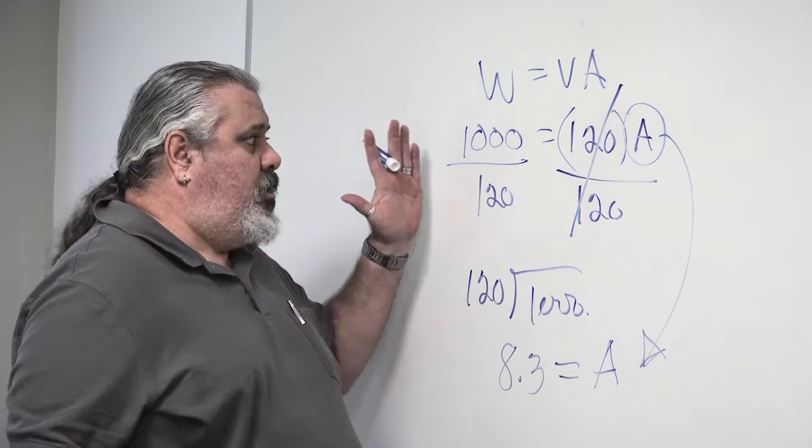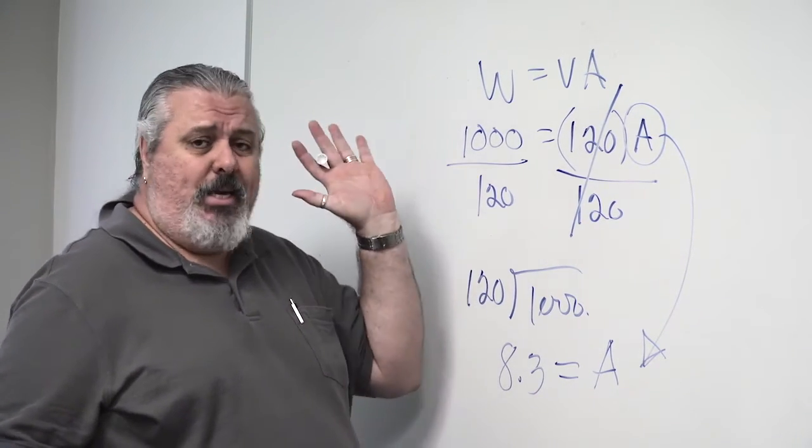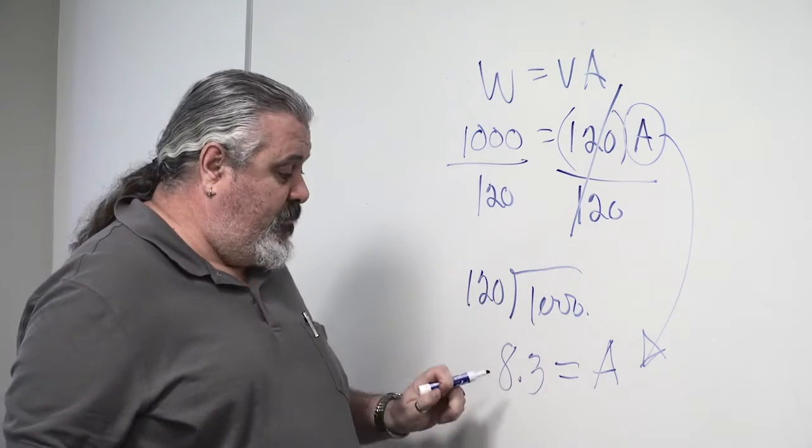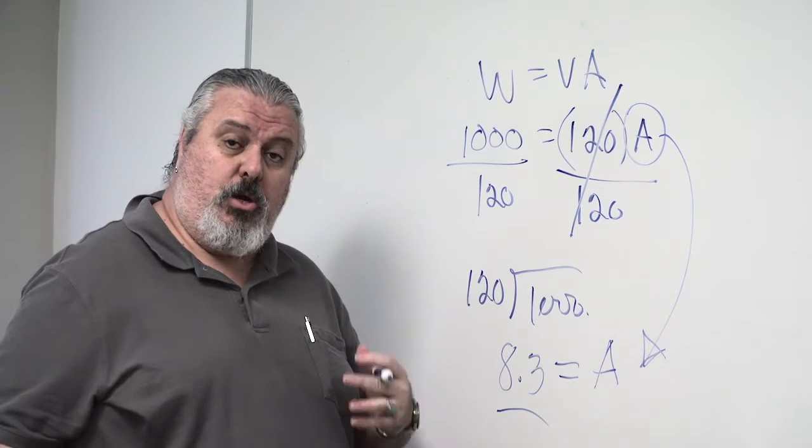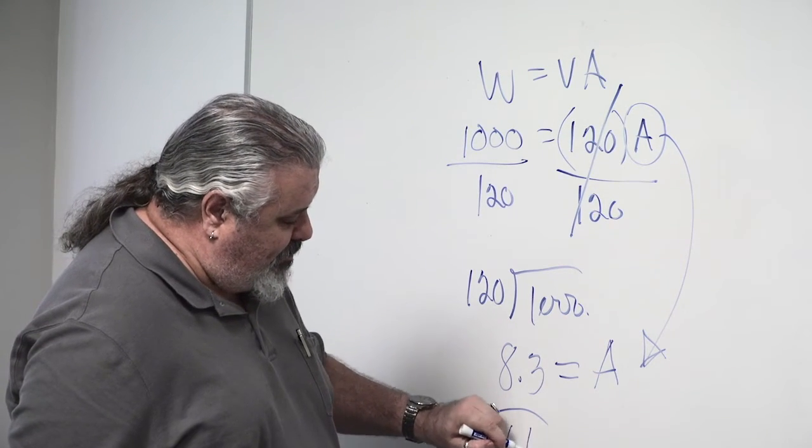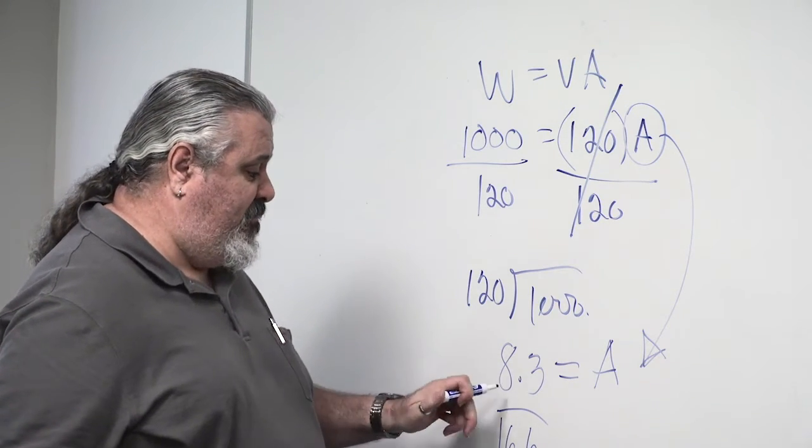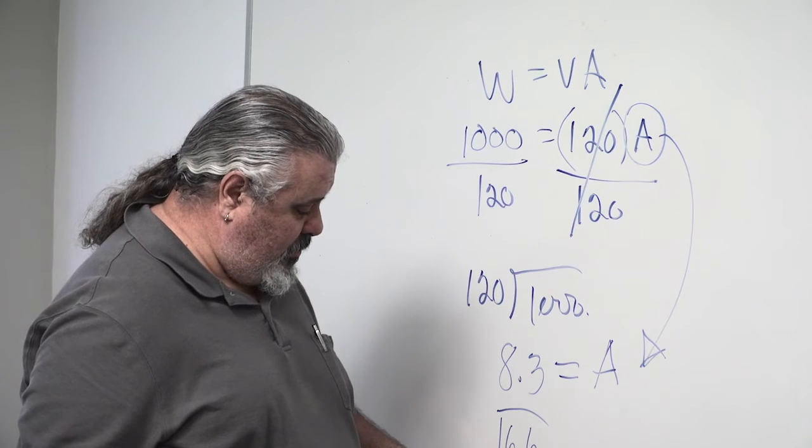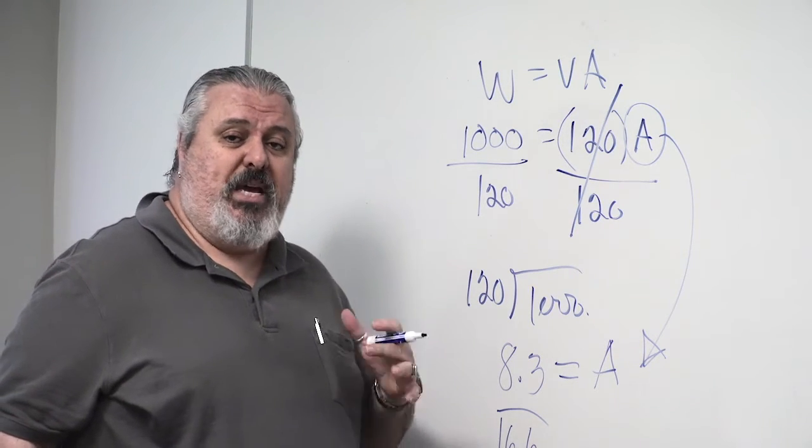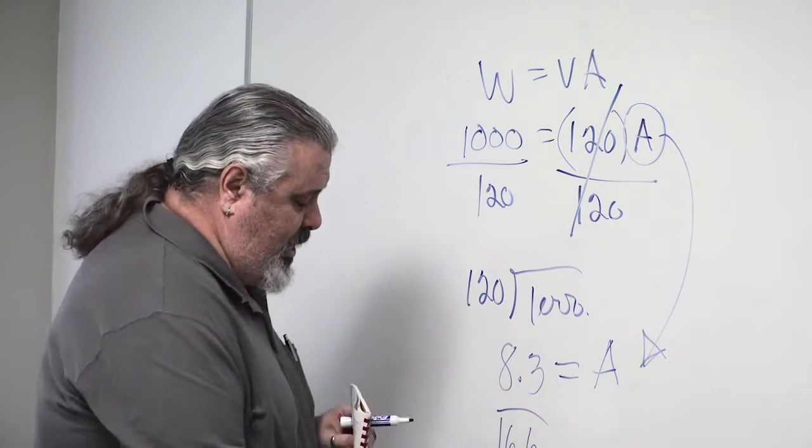Now, if you know the relationship for a 1000 watt light, you can calculate anything on the set very quickly. They're all derivatives of 8.3. So a 2000 watt light is 16.6 amps. A 5k would be 5 times 8.3 or 41.5 amps. So that's the answer, those are your actual amps based on line voltage.